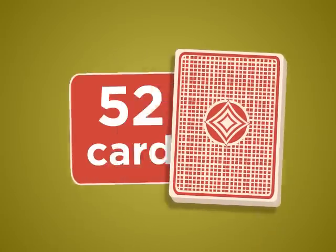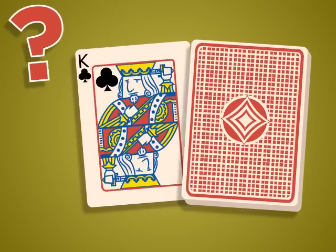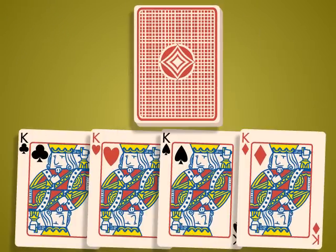Out of a standard deck of 52 cards, what is the probability of drawing a king? There are four kings in a standard deck of 52 cards.